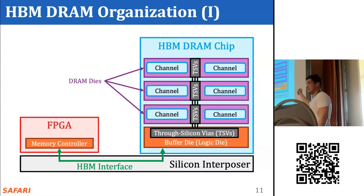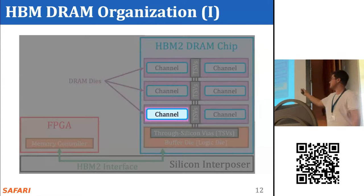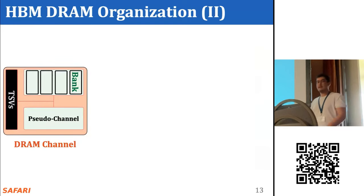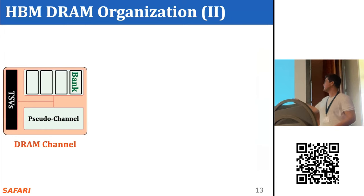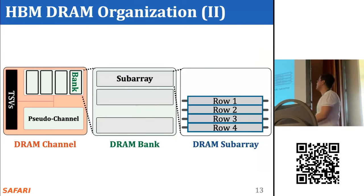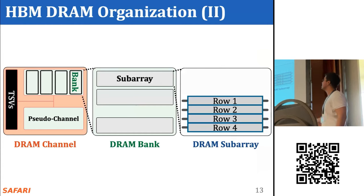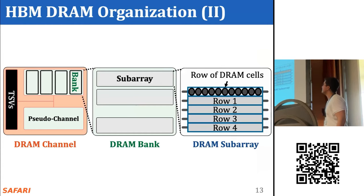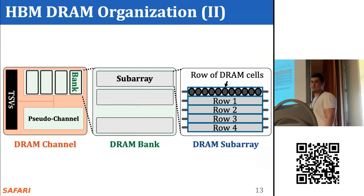The HBM chip contains multiple 3D-stacked DRAM dies, and in each DRAM die we have one or more channels. These channels connect to the buffer die through through-silicon vias. An HBM DRAM channel contains multiple pseudo channels; each pseudo channel has multiple banks, a bank contains sub-arrays, and a sub-array contains many DRAM rows, which in turn contain many DRAM storage cells.